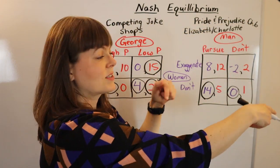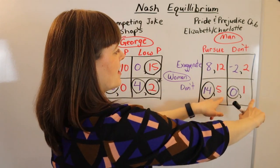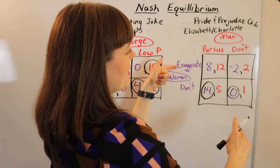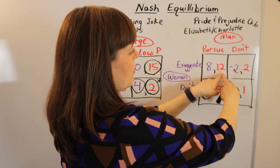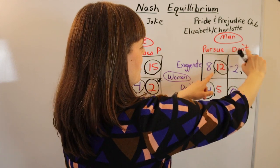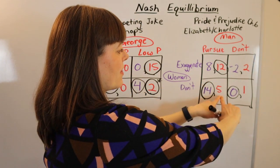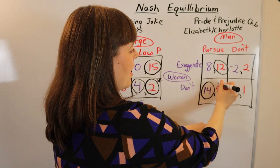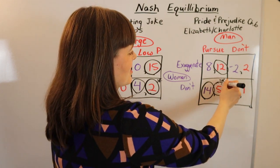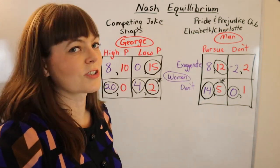Now we switch to the man's perspective, looking at his payoffs. The man says: if the woman exaggerates, would I prefer the 12 or the two? He prefers the 12. If the woman doesn't exaggerate, would he prefer the five or the one? He prefers the five. In which case, our Nash equilibrium is for the woman to not exaggerate and for the man to pursue.